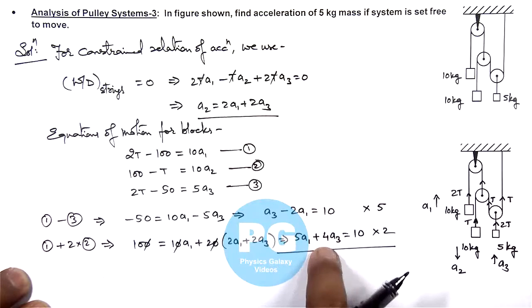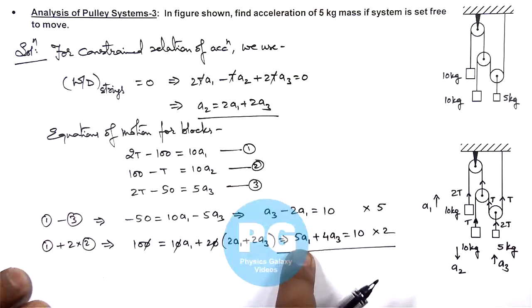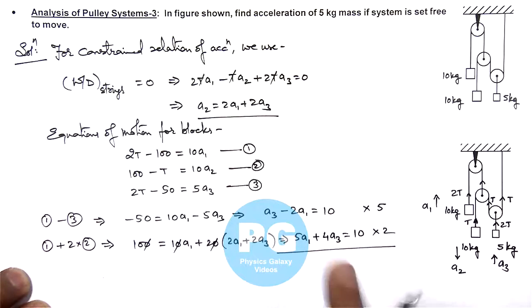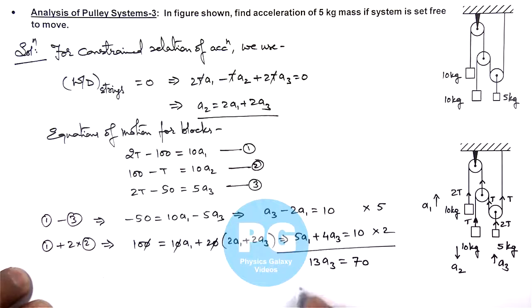So here if we add these two, this minus 10 a1 and 10 a1 gets cancelled out. Here it is 5 a3 plus 8 a3, this will be 13 a3 is equal to 50 plus 20, 70, which is resulting as the value of a3, that is 70 by 13 meter per second square, that is the result of this problem. Thanks.